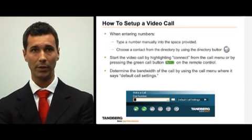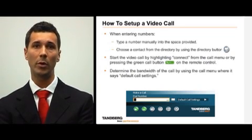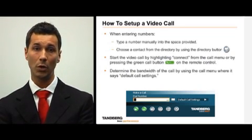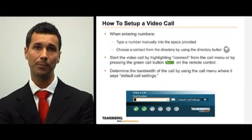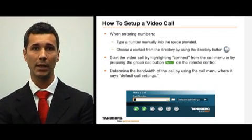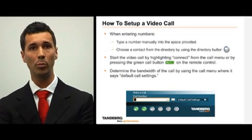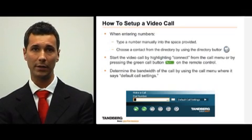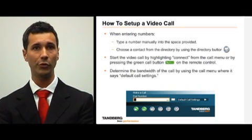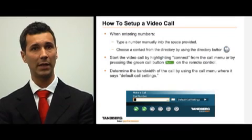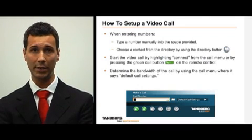To do this, use the directory button on the remote control or select the directory icon from the call menu. Highlight the desired contact and press the green call button to connect the call. You can choose the bandwidth for the call by selecting call settings from the call menu.